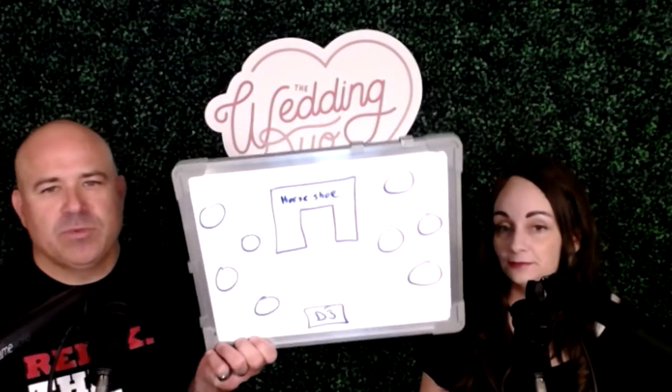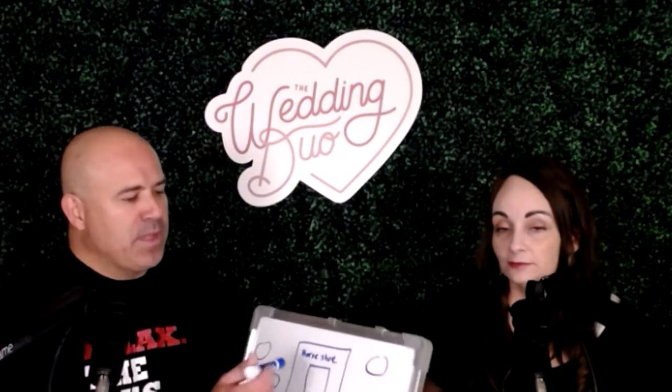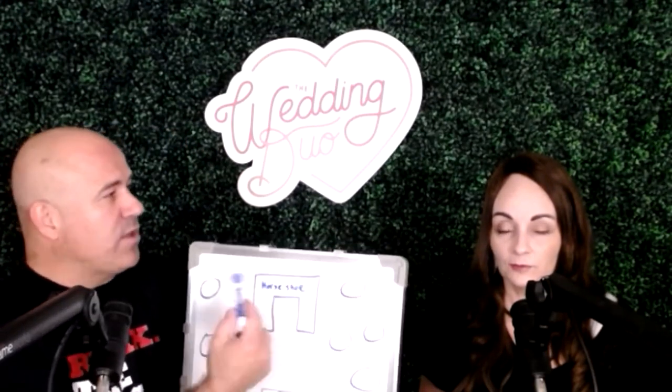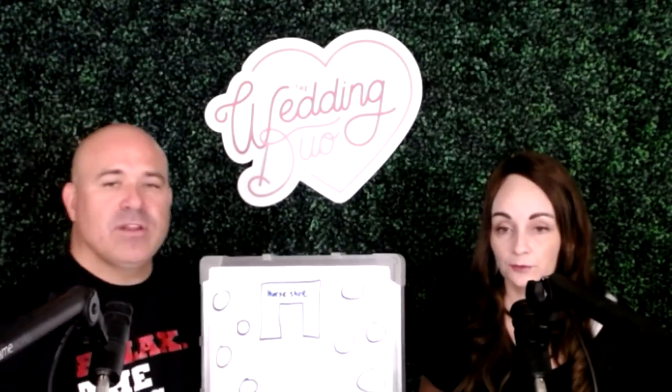Another option that works really well is the horseshoe table. At the base of the horseshoe the couple sits, and then you have your maid of honor and best man left and right with their significant others, and then two more tables shoot off of that. You can do a six or eight-foot table at the base and then two more six or eight-foot coming off. You can also detach the two side tables slightly — we actually did this last weekend and it worked pretty well because you can still get through and it still holds the horseshoe shape.